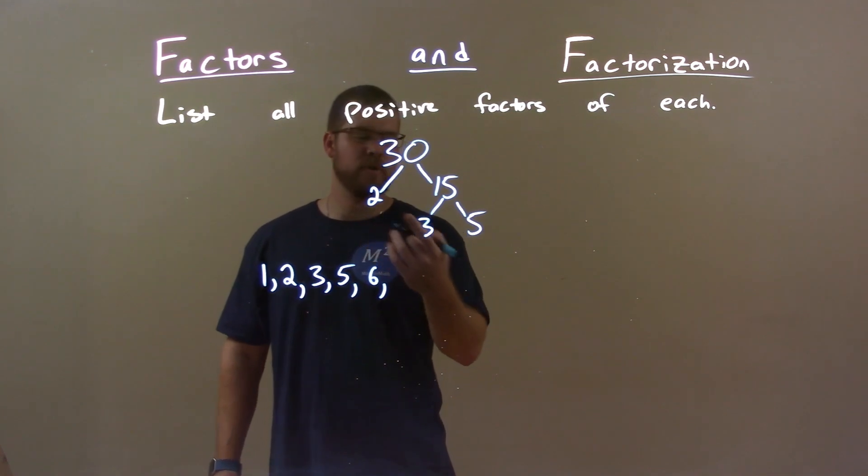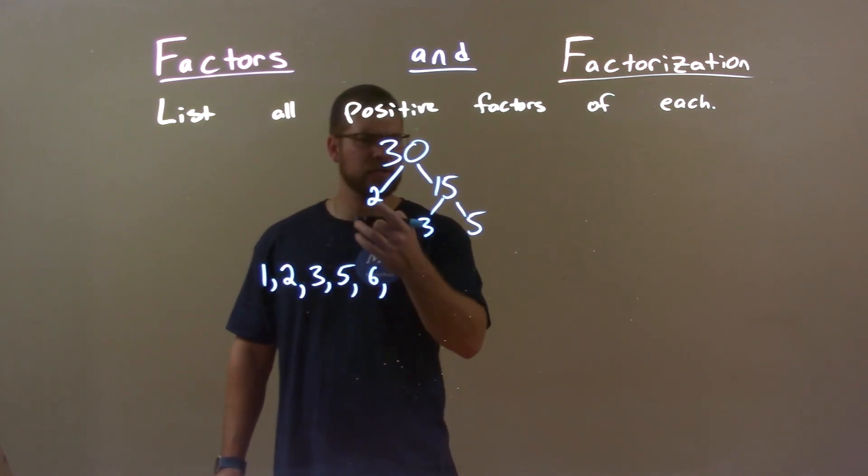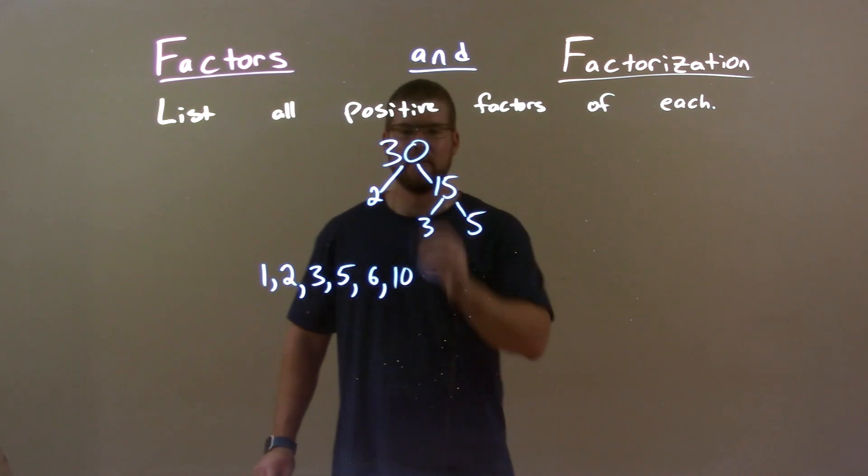What about 10? Well yes, right? 2 and 5. 2 and 5 is 10, right? 2 times 5 being 10.